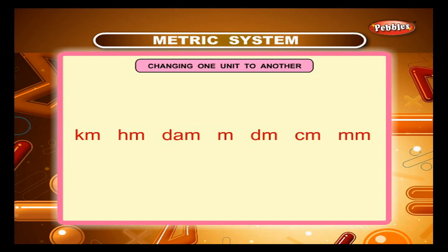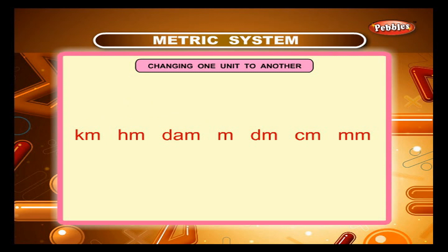The reference chart goes: kilometre, hectometre, decametre, metre, decimetre, centimetre, millimetre. To convert a higher unit to a lower unit, multiply by 10 for 1 jump to the right, by 100 for 2 jumps, by 1000 for 3 jumps, and so on. To convert a lower unit to a higher unit, divide by 10 for 1 jump to the left, by 100 for 2 jumps, and so on.